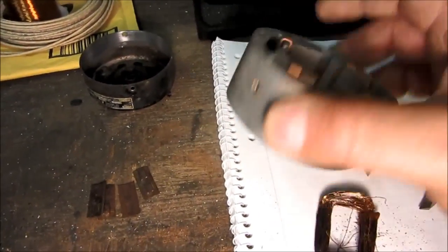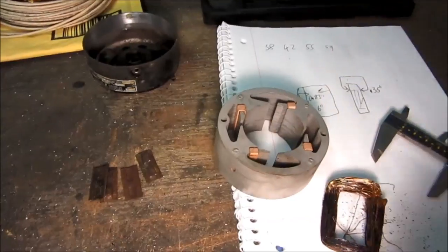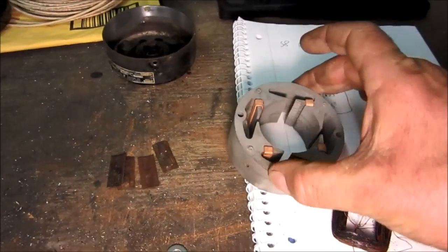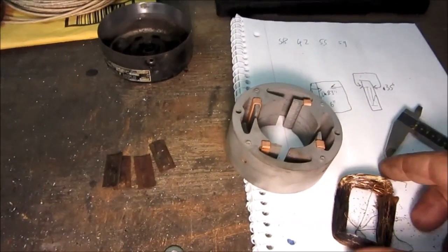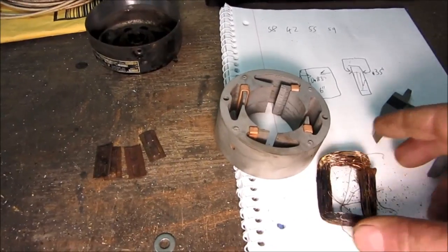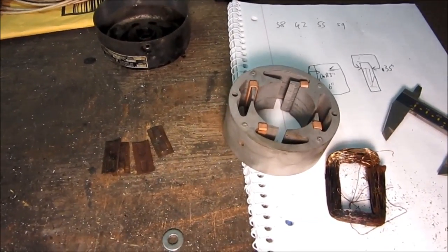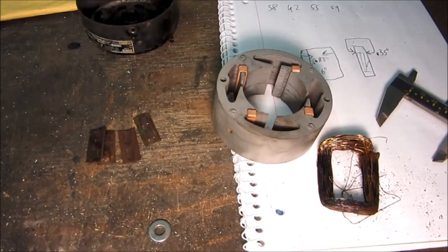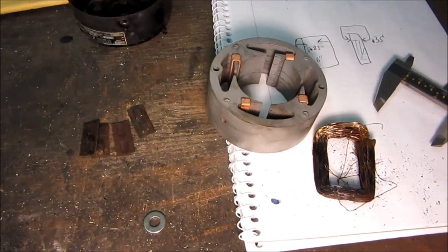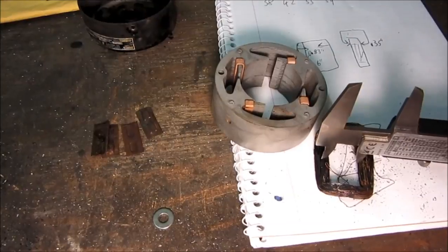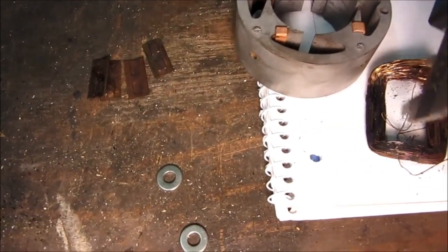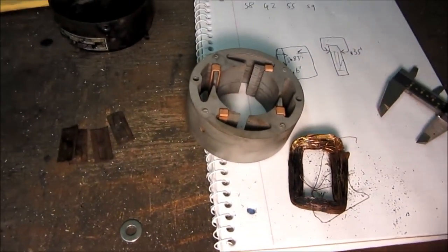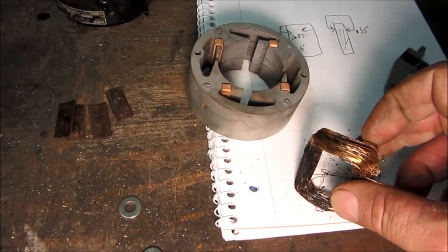I went ahead and took the old windings off. This is one example. I counted how many turns were in there and wrote that down, and I also measured the size of the opening in here.